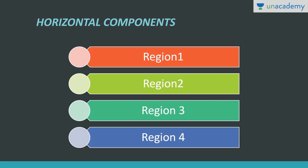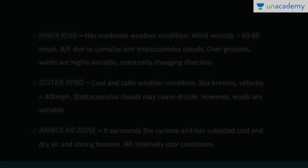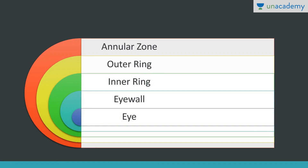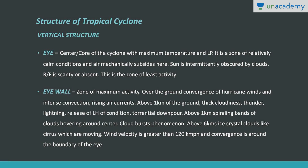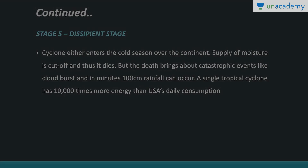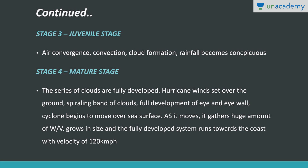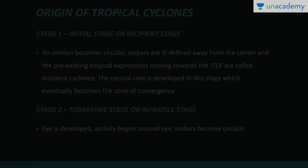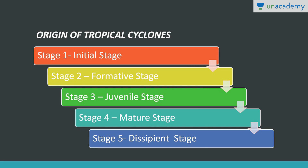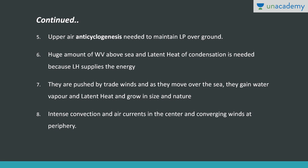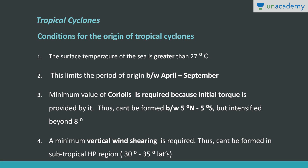In summary, we have studied the horizontal components, vertical components, the different phases in which tropical cyclones occur — the initial, formative, juvenile, mature, and discipline stages — and the conditions required for the origin of tropical cyclones.